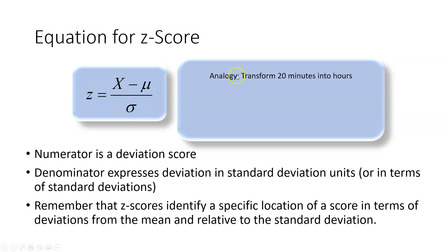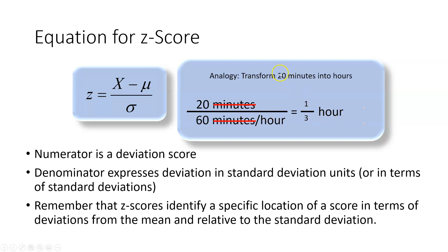By way of analogy, consider needing to transform 20 minutes into hours. You would take 20 minutes and divide it by 60 minutes per hour. The minutes cancel each other out and you're left with 1/3 hour. What we've done is express a value that existed in one unit of measurement and expressed it using another unit — similar to taking a deviation score and putting it in terms of a different unit, standard deviations.